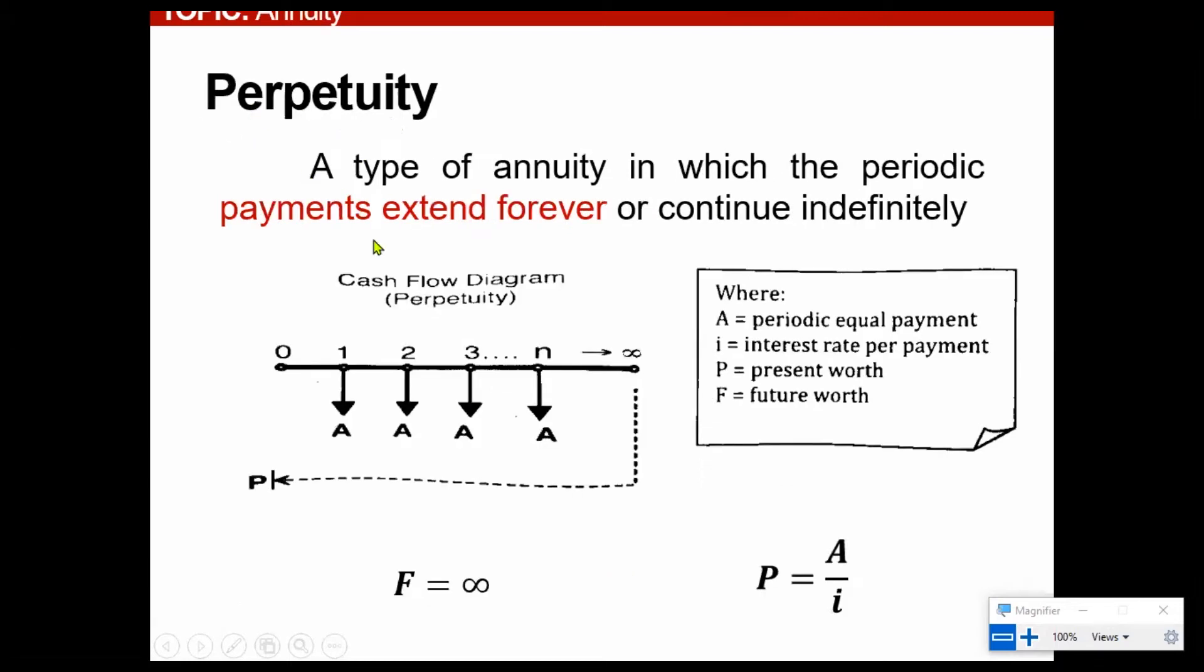Next, perpetuity. What is the concept of perpetuity? It is a type of annuity in which the periodic payment extends forever or continues indefinitely.